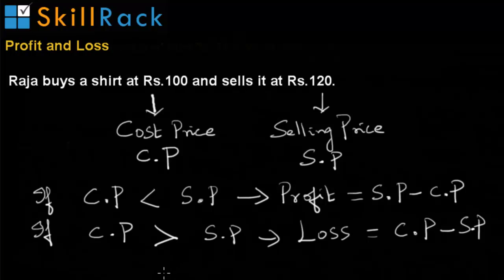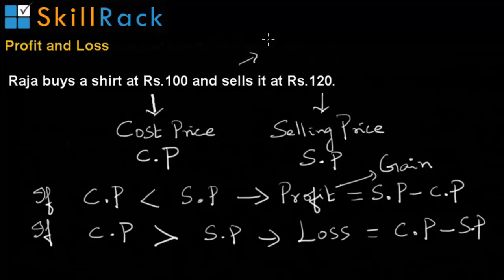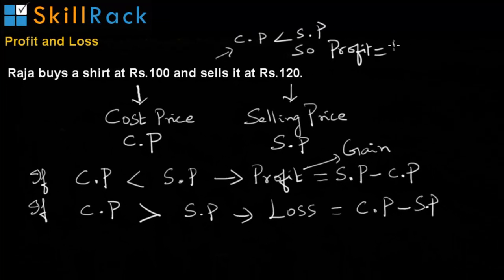In this example, the selling price is greater than the cost price because the shirt is bought at Rs. 100 and sold at Rs. 120. So, in this example, it is a profit or gain. Because the selling price is greater than the cost price, we can calculate the profit as Rs. 120 minus Rs. 100, which is Rs. 20.